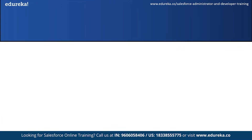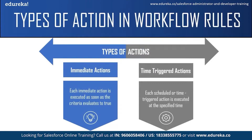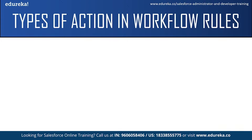There are two types of workflow actions which vary with the time these actions are executed: immediate actions and time-triggered actions. Immediate actions are performed right after the criteria is met, while time-triggered actions are performed after a set time interval. For example, you can automate a workflow rule to send an email 30 minutes after an account is created.